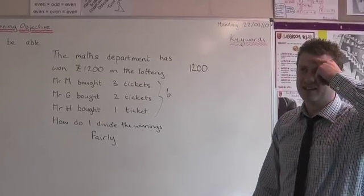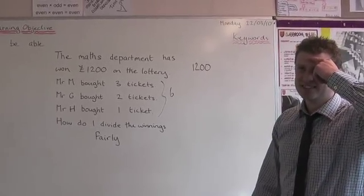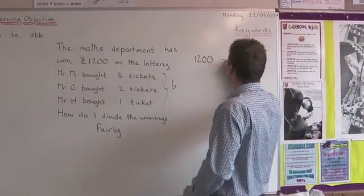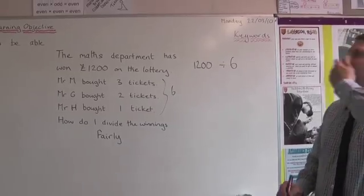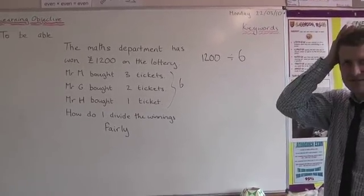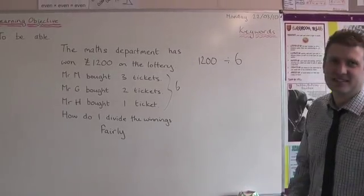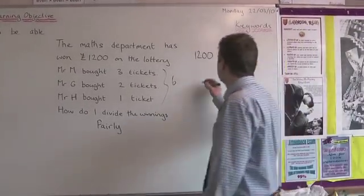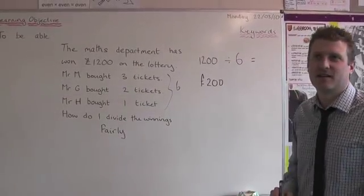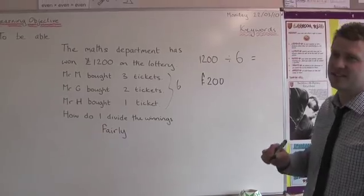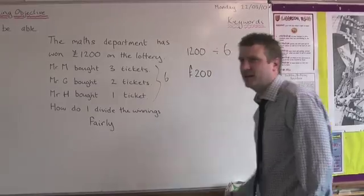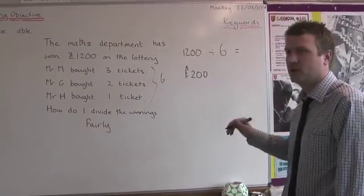How am I going to split £1,200 into six equal parts? Divide — we're going to divide by six. It's 200 pounds, because there are two sixes in 12, and we've got 100 of them. So that means each of these tickets is worth 200 pounds.